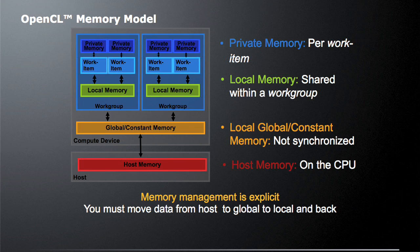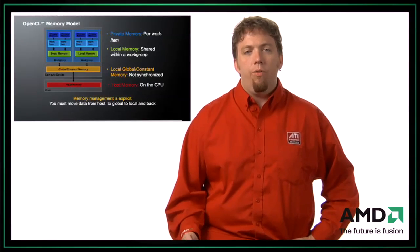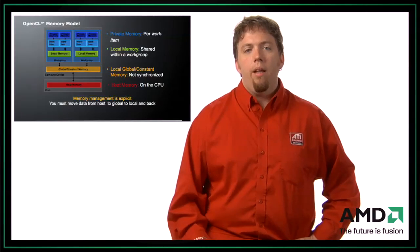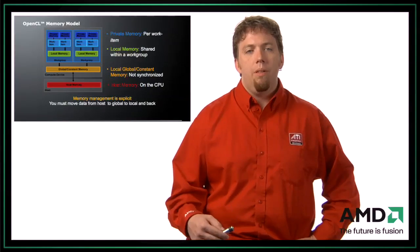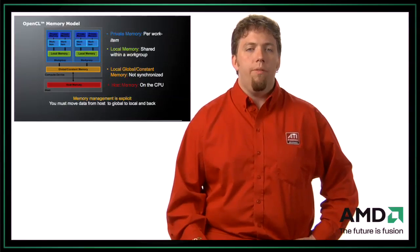So work items cannot access each other's private memory. Each work group also has a local memory, and this is shared within a work group, so any work item within a work group can access this local memory and actually share data. It is important to note, though, that synchronization is up to the developer. You have to explicitly synchronize your memory to make sure that your memory accesses happen in the order that you want them. Memory management is explicit, so it is up to the user to actually manage when memory is synchronized and how it is synchronized. The user must also explicitly manage data to and from global memory. This sounds tedious, but it's actually not that bad — and it's very important for you to be able to manage this explicitly so that you can get the most performance out of the device.